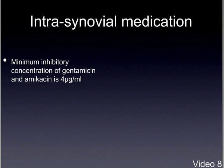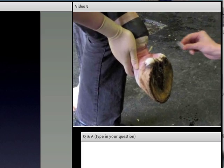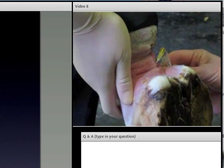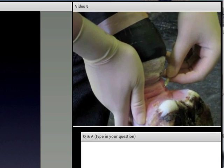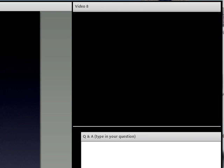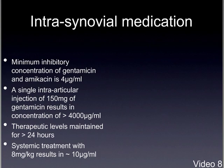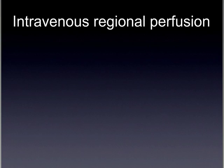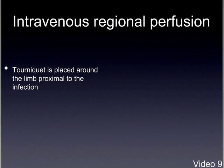The first topical treatment to look at is intrasynovial medication. The minimum inhibitory concentration of both gentamicin and amikacin is 4 micrograms per ml of fluid. A single intra-articular injection of gentamicin 150 mg results in a concentration in the synovial fluid of about 4,000 micrograms per ml — one thousand times the MIC — and those levels are maintained for over 24 hours. By contrast, systemic treatment at 8 mg/kg results in a peak synovial concentration of only about 10 micrograms per ml.